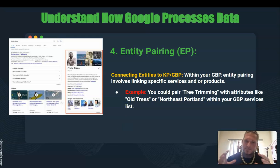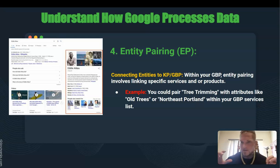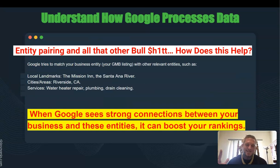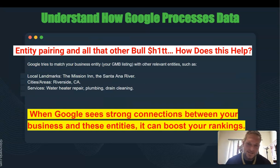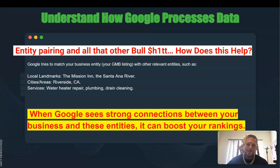Entity pairing is basically what we're going to try to do — do Google's job for it and pair the entities, services, and locations that we want. We are going to match these entities up for Google and get a boost in our rankings.